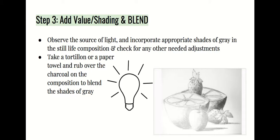Number three: add value and start to shade and blend. Observe the source of light — where is your light coming from? — and incorporate appropriate shades of gray, darks, and lights into the composition. You can take a tortillion, blending stick, or paper towel and rub it over the charcoal to blend the shades of gray. Think about where the shadows and highlights are and how you can show form by blending darks and lights. Also think about the shadows your objects cast onto the ground or table, and where the light is coming from.